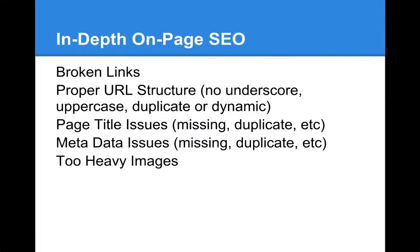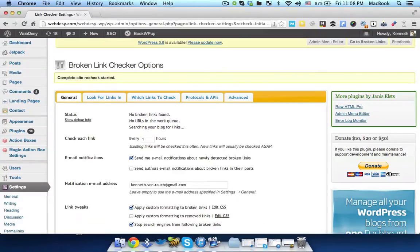In-depth on-page SEO deals with things like making sure that you don't have broken links, title and metadata issues, and that your URL structure is proper. You can install the broken link checker plugin to take care of broken links and images within your site. You may also want to use other software or services to get to know about your in-depth on-page SEO issues.